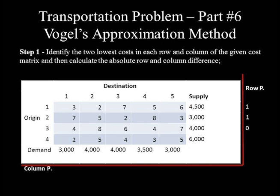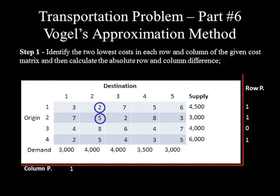In row 4, the two least costs are 2 and 3, so their difference is 1. Now for column penalties: the least cost in column 1 is 2 and the second least cost is 3, giving 1. In column 2, the least cost is 2 and the second least cost is 5, so 5 minus 2 equals 3. In column 3, the least and second least costs are 2 and 4, so 4 minus 2 equals 2. The least cost in column 4 is 3 and the second least cost is 4, giving a difference of 1. In column 5, the two least costs are 3 and 5, so their difference is 2.